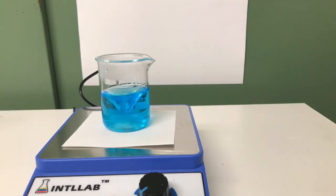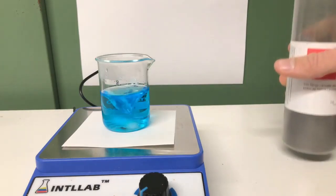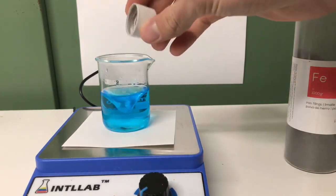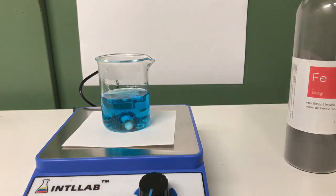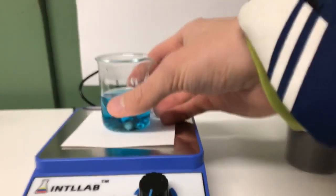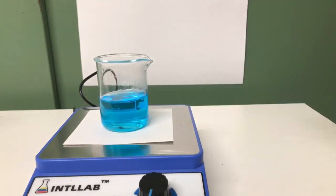Before adding your iron powder, remove your stir bar because it is magnetic and you will see what happens if you don't take it out before you add your powder. It will make your magnetic stirrer stop moving.